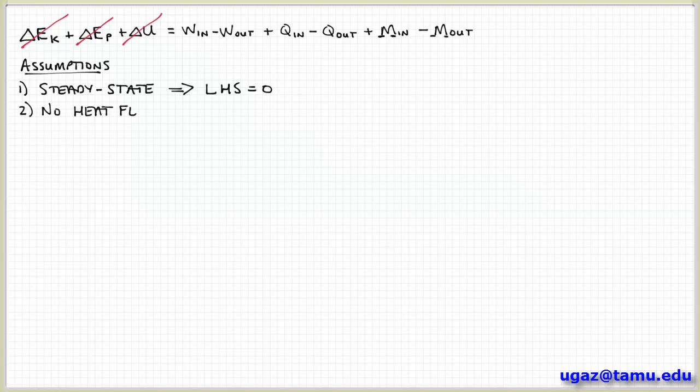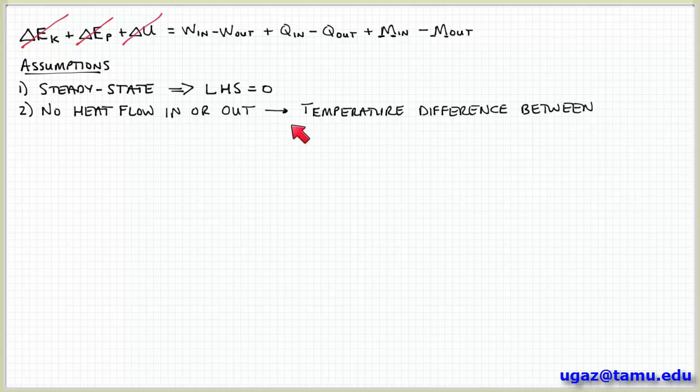The next assumption that we're going to make is that there's no heat flow into or out of the system. And so what this is really saying is that any temperature differences between the control volume and its surroundings are very small. Because remember heat flow, at least by conduction, is driven by temperature gradients. So this statement really means that any temperature gradients or temperature differences between the system and the surroundings are small. So there's no net heat flow occurring into or out of the control volume.